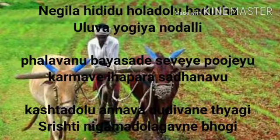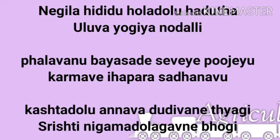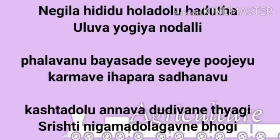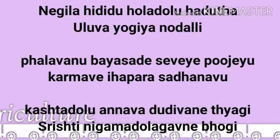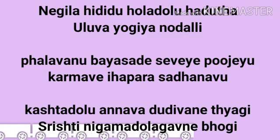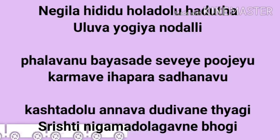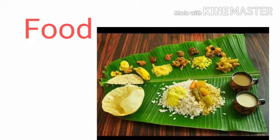Read the famous poem in Kannada written by Rastrakavi Kuwempu. In this poem, words like 'Uluva Yogi' — the person who plows — and 'Annava Dudivanetyagi' — the person who sacrifices himself and produces food — have been used. Can you guess who he is? A Farmer. This poem is composed about farmers who provide food for us.